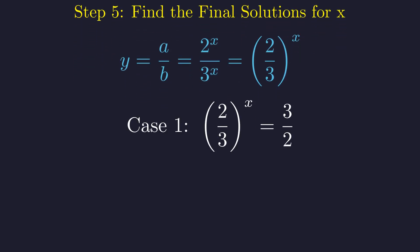In our first case, (2/3)^x = 3/2. Here's a neat trick. We can rewrite the right side using the same base as the left. 3/2 is just the reciprocal of 2/3, so it's (2/3)^(-1).